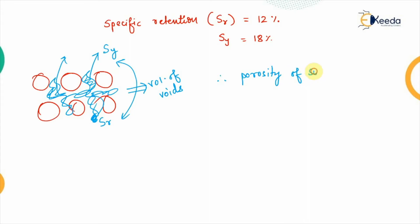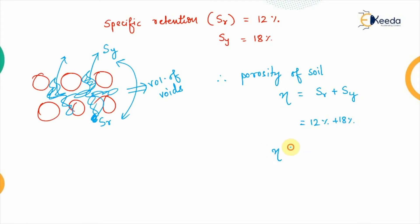Therefore, porosity η equals specific retention plus specific yield, which is 12% + 18% = 30%. That is the porosity of the soil, completing the first problem.